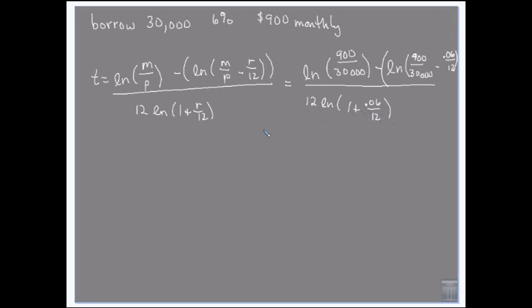And then we'll do 12 times the natural log of 1 plus 0.06 divided by 12. So first I'm going to do 0.06 divided by 12. And that's 0.005. So here's what's going to happen.